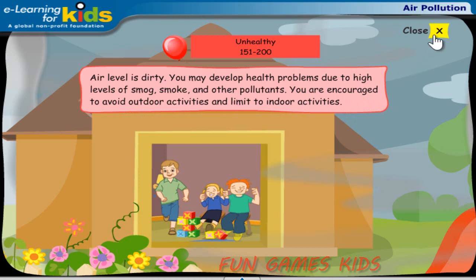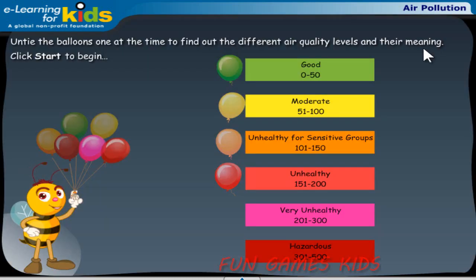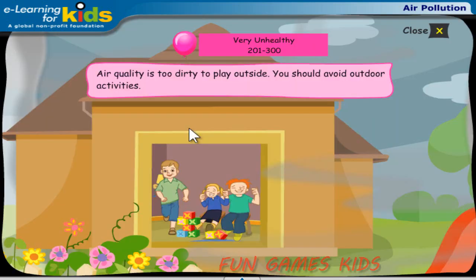Click the close button in the upper right corner to continue. Click the purple balloon. Air quality is too dirty to play outside. You should avoid outdoor activities. Click the close button in the upper right corner to continue.